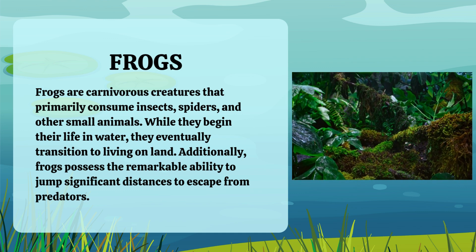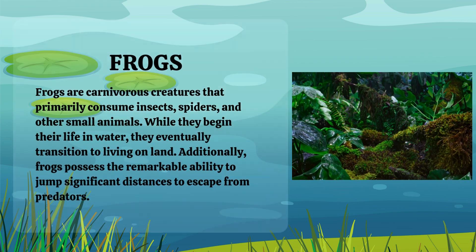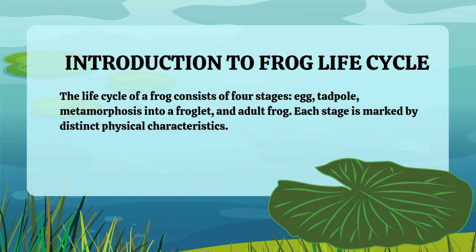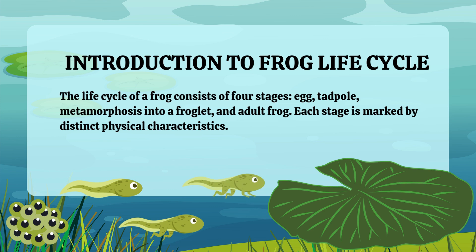This agility is key to their survival. The life cycle of a frog consists of four distinct stages — egg, tadpole, metamorphosis into a froglet, and adult frog. Each of these stages is marked by unique physical characteristics that signify the frog's growth and development.